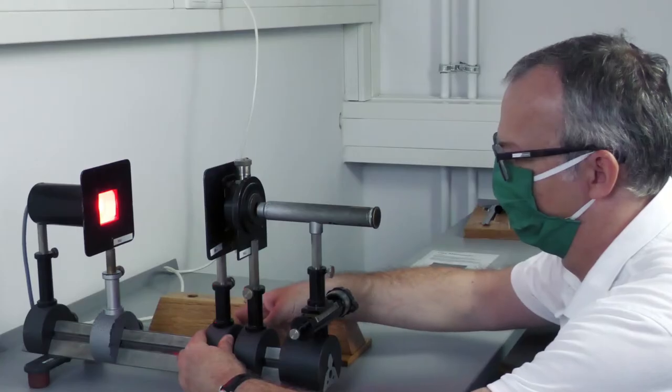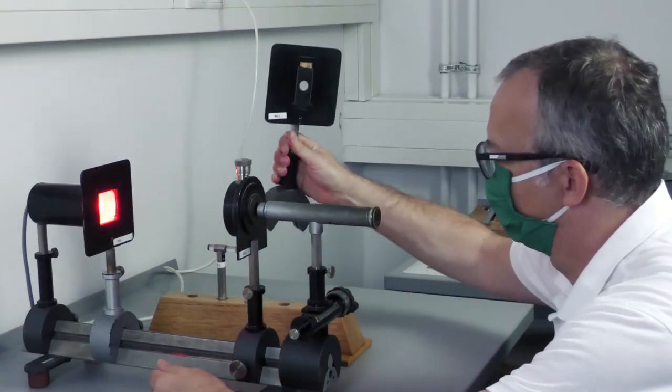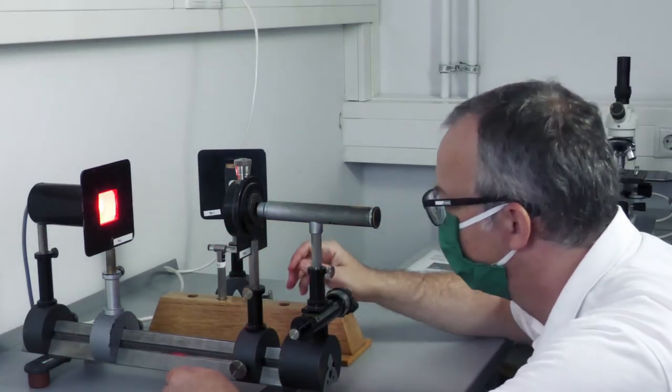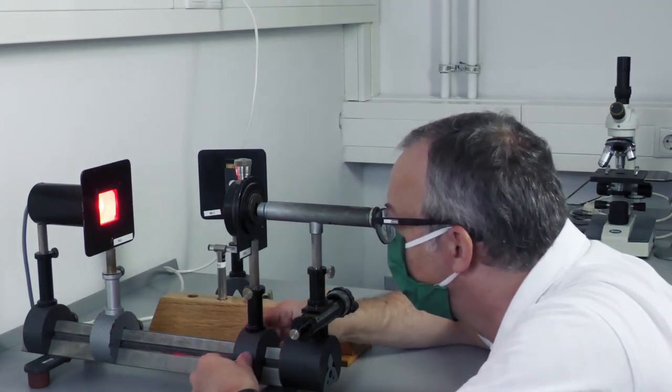To determine the aperture of the slit, the glass scale is now removed. First, the image of the slit is brought into focus by moving it. The gap width is measured with the micrometer drive under the tube.